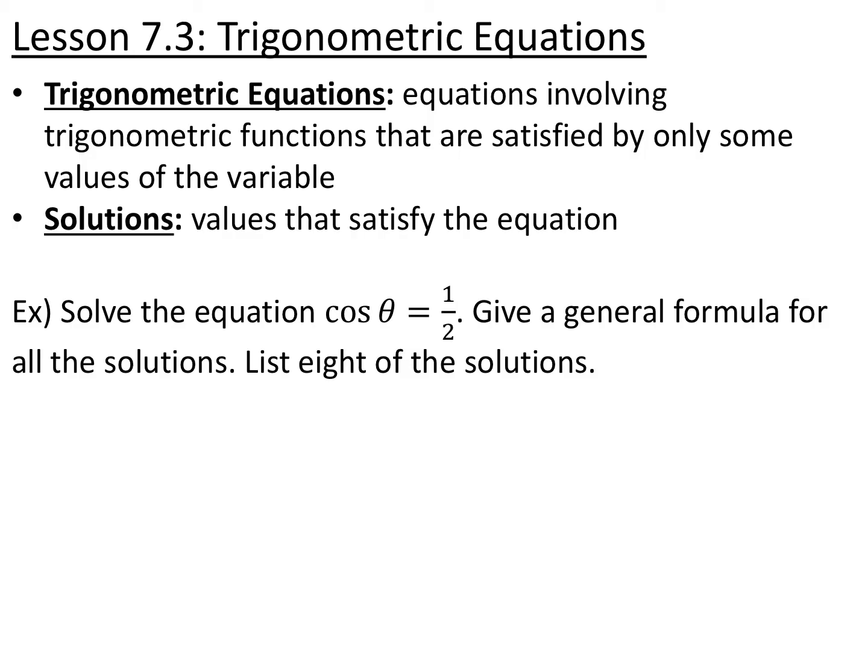For example, if we have the equation cosine of theta equals one half, we want to find all the angles for theta where cosine of that angle equals one half. Sometimes they will give you a specific domain to write your angles in. Sometimes they will say give a general formula for all of the solutions because there's technically an infinite number of them, or sometimes they will tell you to list a specific number of solutions.